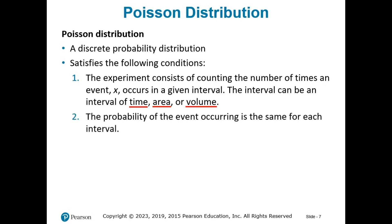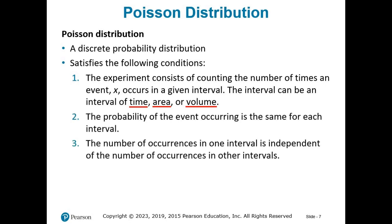The second condition: the probability of the event occurring is the same for each interval. Third, the number of occurrences in one interval is independent of the number of occurrences in other intervals. Also very helpful in identifying Poisson distributions: you're dealing with an average of something happening over an interval. Anytime you see the mean number, average number, or typical number of something happening over an interval, that'll clue you in that it's a Poisson probability distribution.